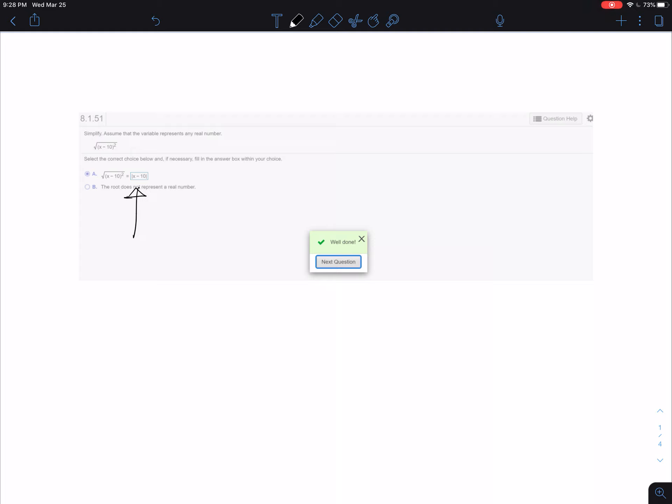So our answer will be right there. You see it? A little hard to see, but... And that's because the index number here is 2, which we don't usually write, and it's x minus 10 squared. The 2 matches. And therefore, we have the absolute value of x minus 10.